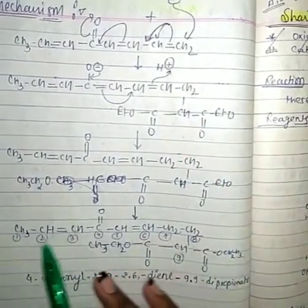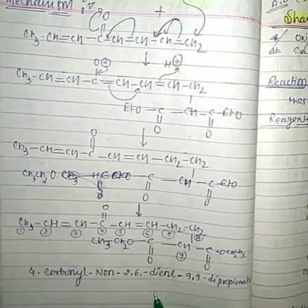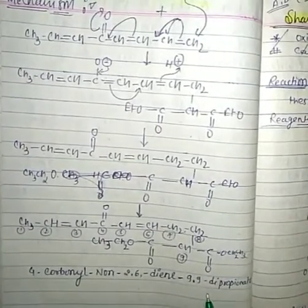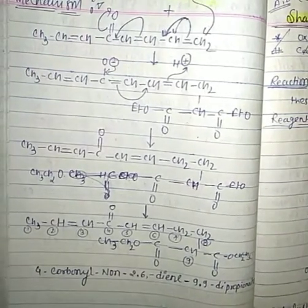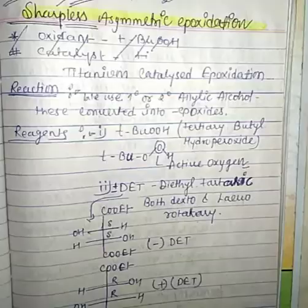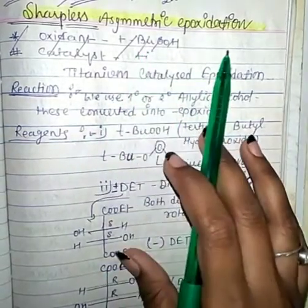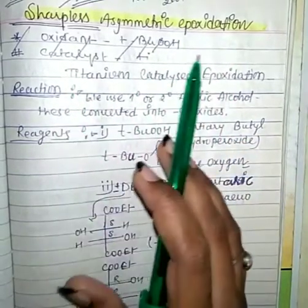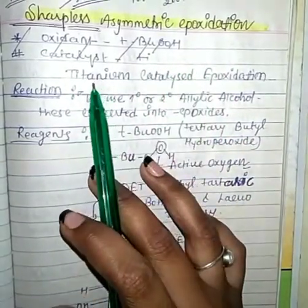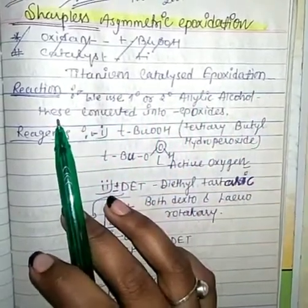We get the main product here — we get 4-carbonyl non-2,6-dien-9,9-dipropion — this is our main product. Next we see Sharpless asymmetric epoxidation. It is also a reaction involving titanium-catalyzed epoxidation.